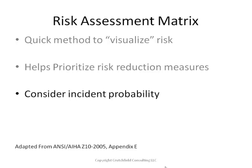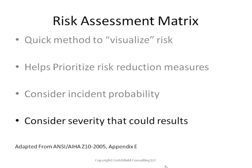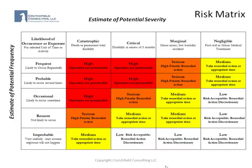It helps us consider incident probability. It also helps us consider the severity that could result. This is a risk matrix. There are a number of different variations of these in various textbooks and articles. This one is taken from the ANSI Z10 2005.